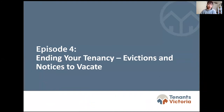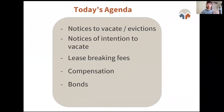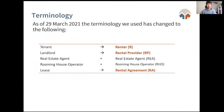This is our last installment of the four-part webinar series. Today we're covering the end of a tenancy — what happens if you want to leave, if the landlord wants you to leave, or if there are evictions or notices to vacate. On today's agenda: lease breaking fees, compensation, bonds, how to get the bond back, and the process of leaving. The terminology used follows the changes as of the 29th of March — renter, rental provider, real estate agent, rooming house operator, and rental agreement. Key abbreviations include VCAT (Victorian Civil and Administrative Tribunal) and RTBA (Residential Tenancies Bond Authority).